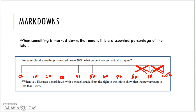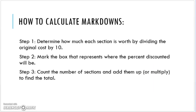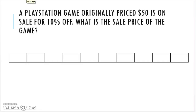So let's look at what we're going to do. First, figure out how much each section is worth by dividing the original cost by the number of sections. Today we're always going to have 10 sections representing 100%, so we'll divide by 10 every time. Then we mark the box to represent where the discount is, find that discount price point, and determine how many sections remain and what it actually costs. Here's a PlayStation game originally priced at $50.